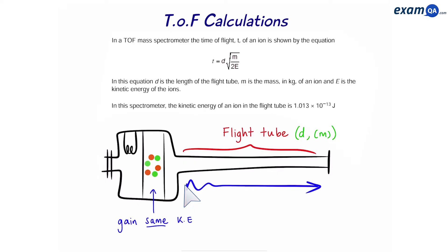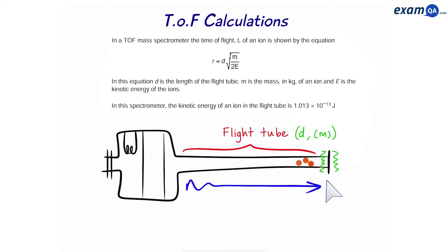They move into the flight tube and separate. At the end, they hit the detector and this creates a current. We saw that the isotopes, despite having the same amount of kinetic energy, took different amounts of time crossing the flight tube. The lighter ones move faster than the heavy ones. This time is known as the time of flight, and this is something we have to calculate in some questions.